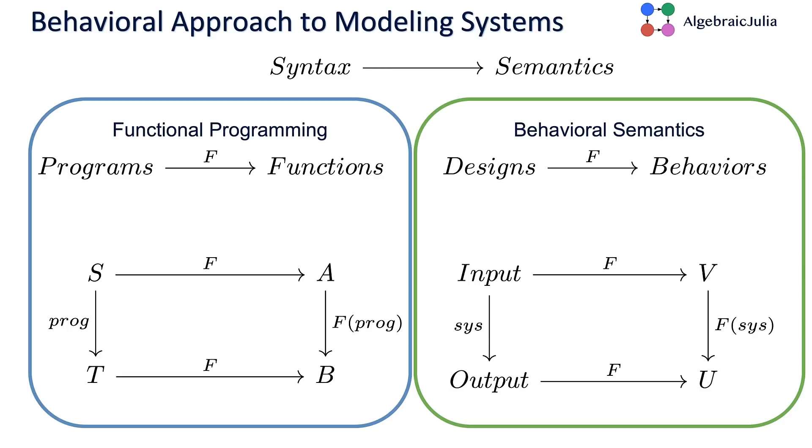Here we're using what's called behavioral semantics. It's the same idea that you have a category of systems or designs, and a category of behaviors, which might be set or rel, the category of relations. The idea is that there are ways you can compose systems to build big systems out of little ones, and then you want functorial semantics that what the systems do, their behavior, can be expressed in terms of the behavior of the components. That's behavioral semantics.